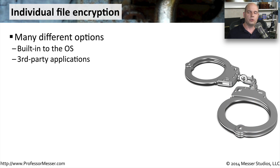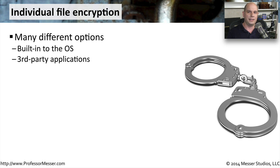If you don't want to encrypt everything on your drive or take advantage of full disk encryption, but there are certain files you'd like to store in an encrypted form, you might want to take advantage of some built-in capabilities of your operating system. Many operating systems allow you to right-click on a file, choose to encrypt it, and that file will then stay encrypted on disk. That way, if somebody came across your computer, they may be able to see some spreadsheets and documents on your drive, but the ones you've encrypted would be protected.